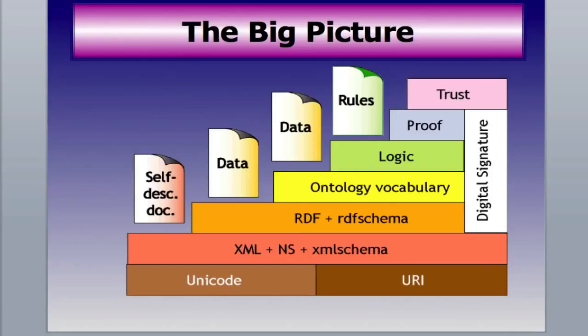Here's the big picture. This shows the different layers of the semantic web. Some of these you know already, and some of them we'll cover in this presentation. But on the very bottom is Unicode and Uniform Resource Identifiers, and that's like a nameplate for everything that's going to be captured on the web. Unicode is a common code language.